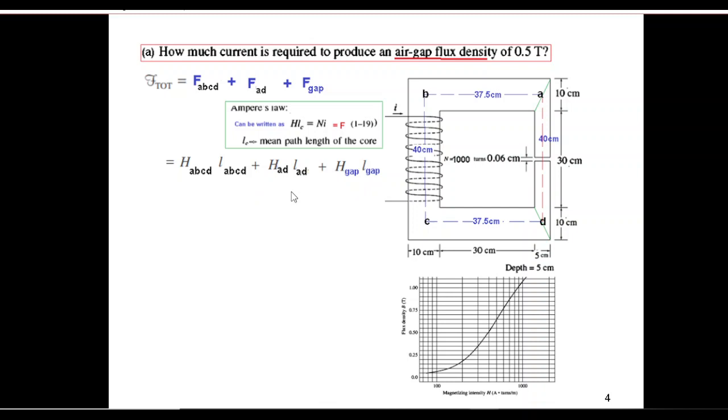For the metal part, H can be calculated with the help of this graph if we know the flux density. And for air gap we will have to use a different formula. So first of all we will try to find out the flux density in these areas.